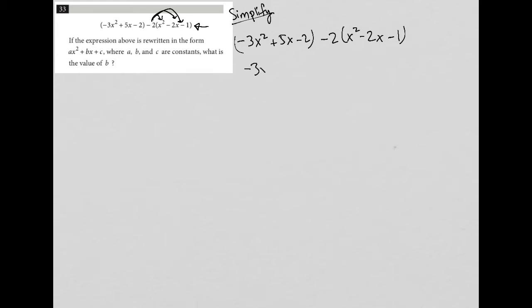So I have negative 3x squared plus 5x minus 2, and then negative 2 times x squared is negative 2x squared, and negative 2 times negative 2x is positive 4x, and negative 2 times negative 1 is positive 2.